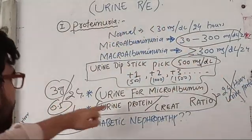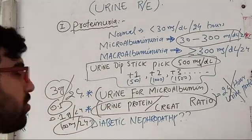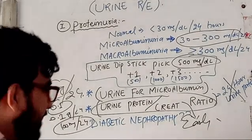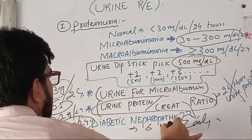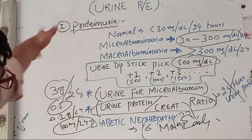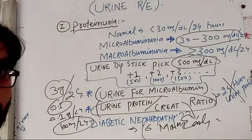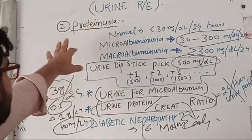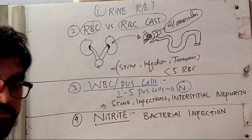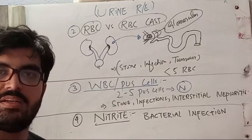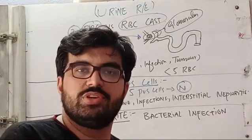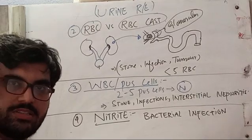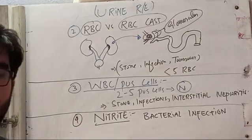The urine protein-to-creatinine ratio can detect microalbuminuria and should be done early in the morning, because standing and exertion increase urinary protein. It should be repeated after six months. If a patient has protein in urine and other findings are normal, think about damage at the glomerular or tubular level. Infections can also cause significant proteinuria, but in infections you will also find WBCs, RBCs, or nitrite. Protein can come from the kidneys or from below — the bladder or ureter — if there is infection.